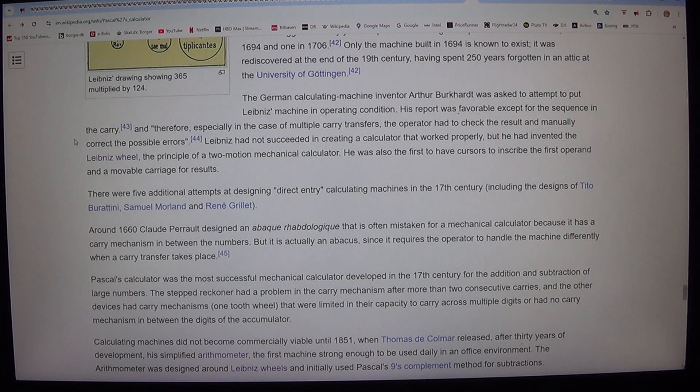Leibniz had not succeeded in creating a calculator that worked properly, but he had invented the Leibniz wheel, the principle of a two motion mechanical calculator. He was also the first to have cursors to inscribe the first operand and a movable carriage for results.